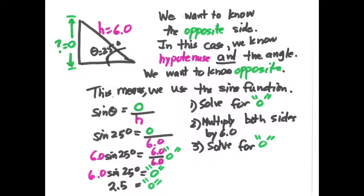Now we're going to solve for the opposite side. We can do that by plugging in as we go and solving for one variable. Sine of theta equals opposite divided by hypotenuse. We multiply both sides by 6, so 6 times the sine of 25 degrees equals the opposite side. If you do this, you'll find that 2.5 equals the opposite side.